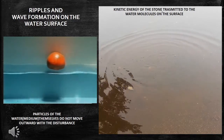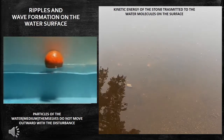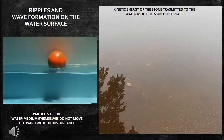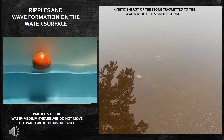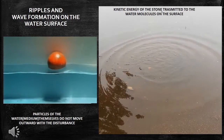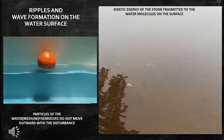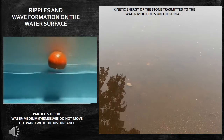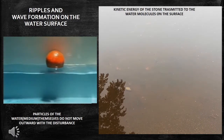The particles of the water — that is, the medium — themselves do not move outward with the disturbance. This can be observed by keeping a small ball on the surface of the water. The ball moves up and down when the disturbance passes, showing that the water molecules only undergo vibratory motion about their mean positions.